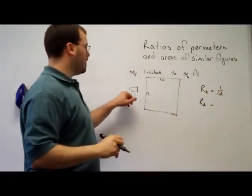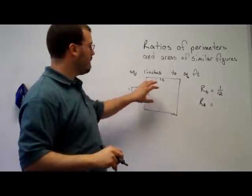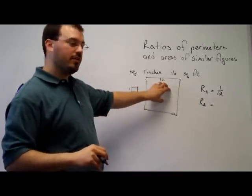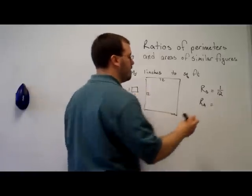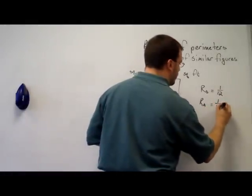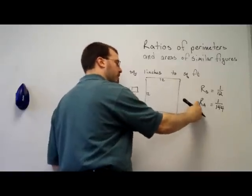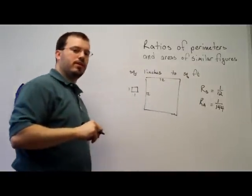And our ratio of the areas, well, 1 square inch is the area here. This area in square inches is 144, 12 by 12. So 1 to 144. Again, the ratio of the sides squared gives us the ratio of the areas.